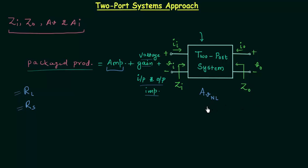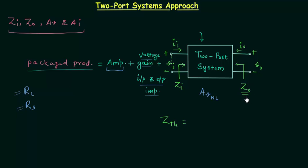AVNL is the voltage gain when there is no load resistance connected to this two-port system. Now we will apply Thevenin's theorem and substitute the Thevenin's equivalent circuit between the output terminals. To find the Thevenin's impedance ZTH, we short-circuit all voltage sources — specifically VI is set to 0V — and in that case the Thevenin's impedance is simply the output impedance. So ZTH equals ZO.